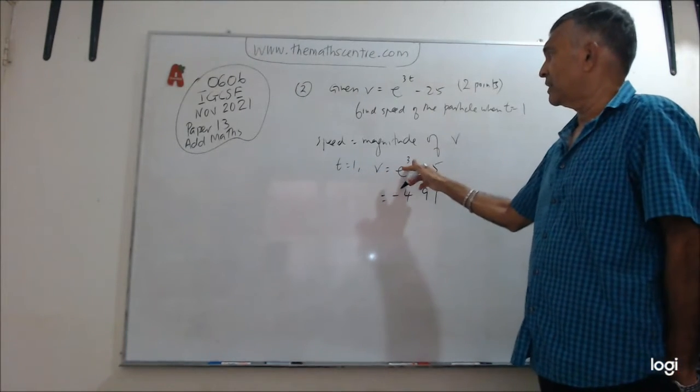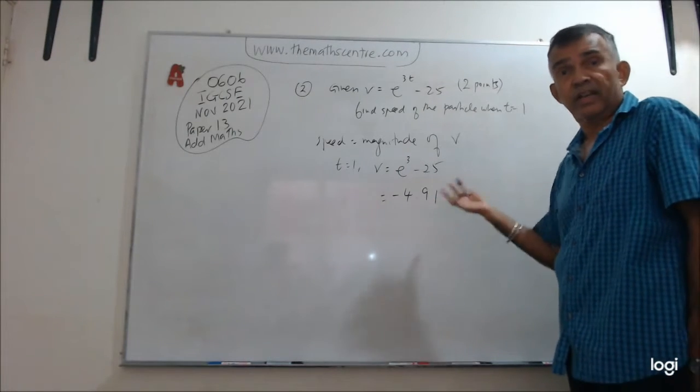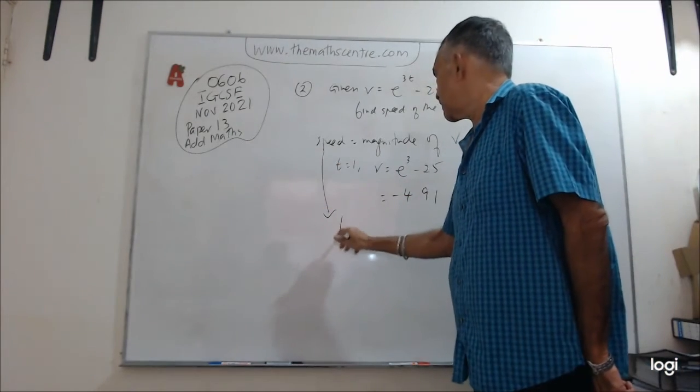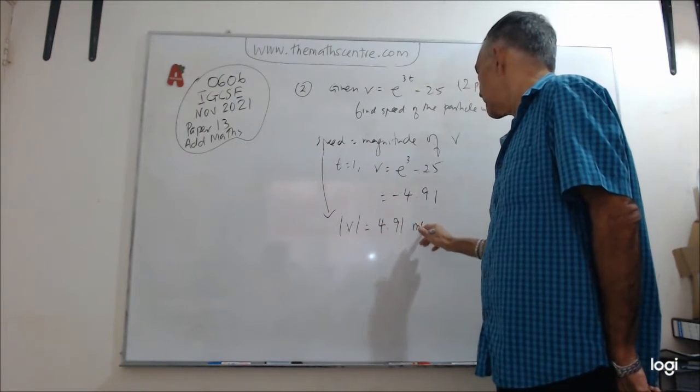So be careful. When t equals 1, just plug in e to the power 3 minus 25 to your calculator, you will get a value, negative something. So you want the speed. Therefore, you just take the magnitude which is 4.91 meter per second.